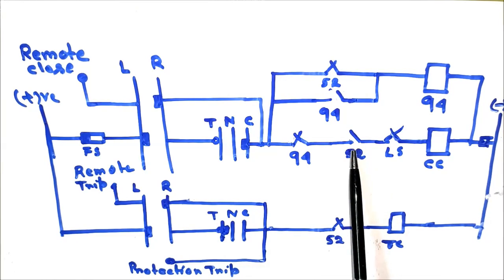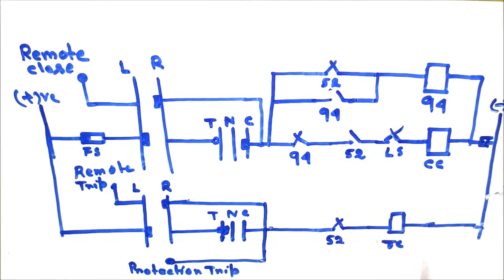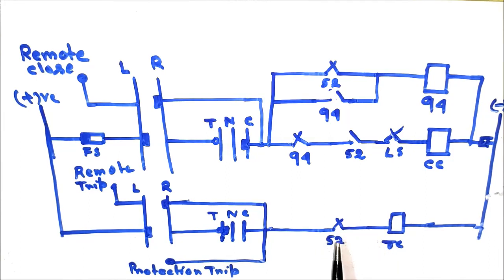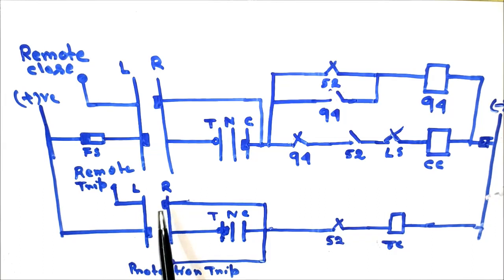Since the circuit breaker is now in the ON condition, all auxiliary contacts of the circuit breaker will change their positions — NC contacts will come to NO position and NO contacts will come to NC position. Now let us look at how the trip coil is energized, that is, how the tripping of the circuit breaker is done in the case of local operation. This is the trip circuit of the circuit breaker. In series with the trip coil we have an auxiliary NO contact of the circuit breaker. Whenever the circuit breaker is in the closed position, this contact will come to the NC position. This is the trip-neutral-close contact, that is the tripping contact of the TNC switch, and this is the local-remote selector switch contact — in local position this contact will be through.